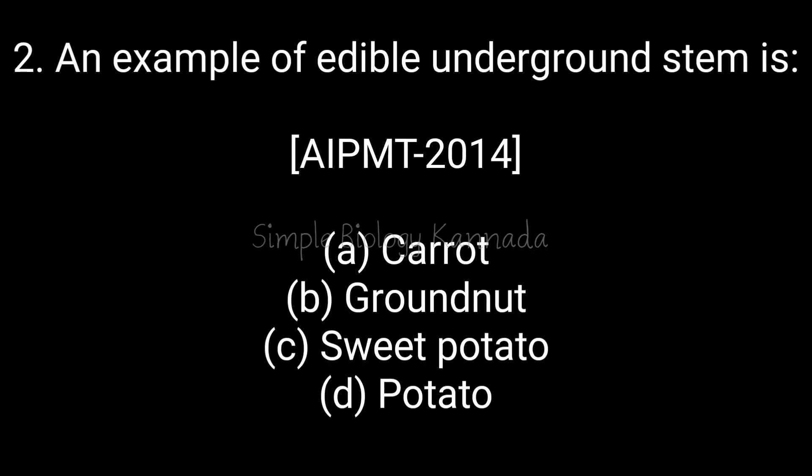Next question: an example of an edible underground stem is — option A: carrot, B: groundnut, C: sweet potato, D: potato. Carrot and sweet potato are root modifications, underground root modifications. Coming to option B, groundnut — that is also not correct. So the correct answer is option D: potato.